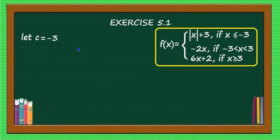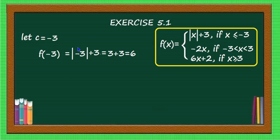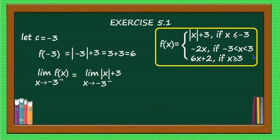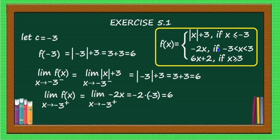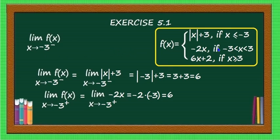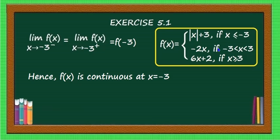For Case 2, c = -3: f(-3) = mod(-3) + 3 = 3 + 3 = 6. Left-hand limit as x → -3⁻ of mod(x) + 3 = mod(-3) + 3 = 6. Right-hand limit as x → -3⁺ of -2x = -2(-3) = 6. Since left-hand limit = right-hand limit = f(-3) = 6, f(x) is continuous at x = -3.